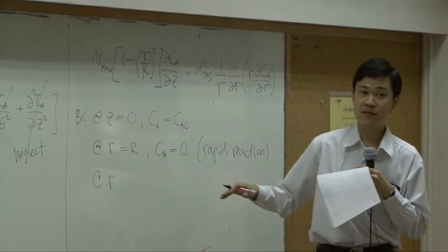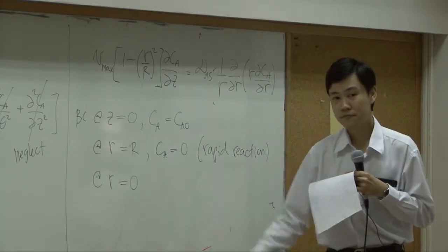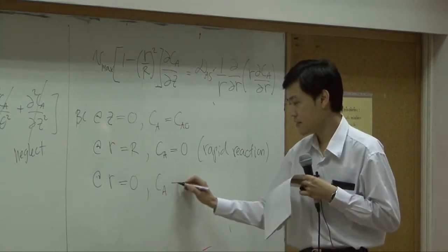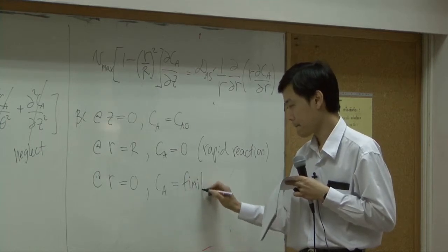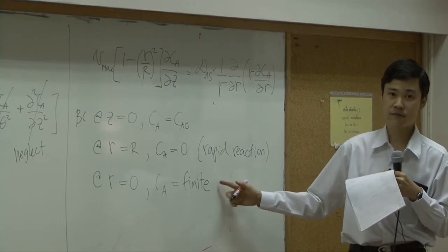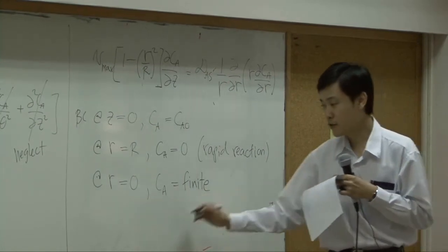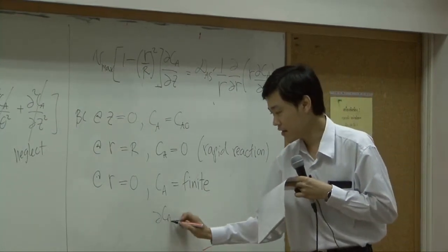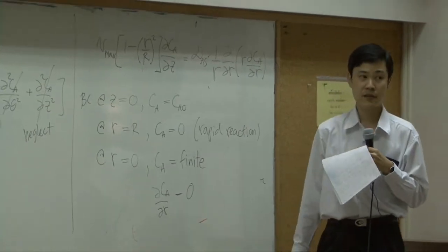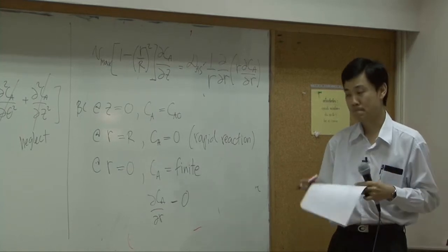What is the other boundary? At r equals zero, what do you know? You can say CA is finite. It may help, it may not, because you never know how to solve this as long as it is finite. But you will definitely know that dCA/dr equals zero, because concentration profile would be symmetric.